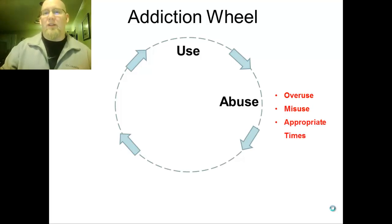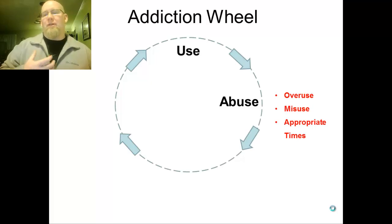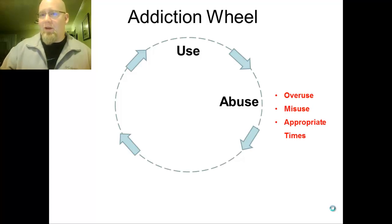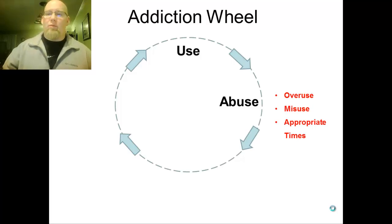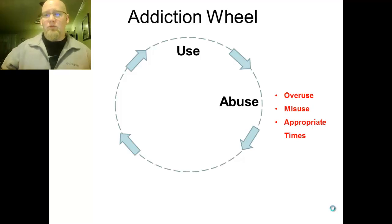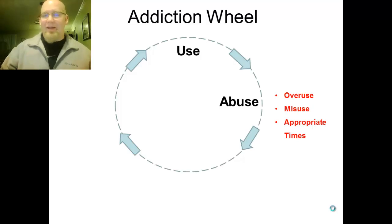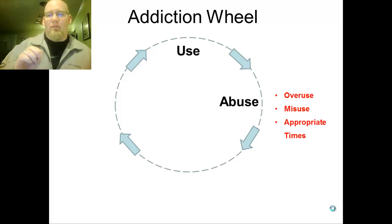The third criteria for drug abuse is whether you use at appropriate times. For example, being over 21 means it's legally okay to drink, but that doesn't mean it's okay to drink whenever you want. If you go to a bar and grill, order a beer with lunch — that might be fine. But if you have to be back at school before fourth hour, that wouldn't be an appropriate time, because you'll still have alcohol in your system. Just because it's legal doesn't mean the timing is appropriate — that would be considered abuse.